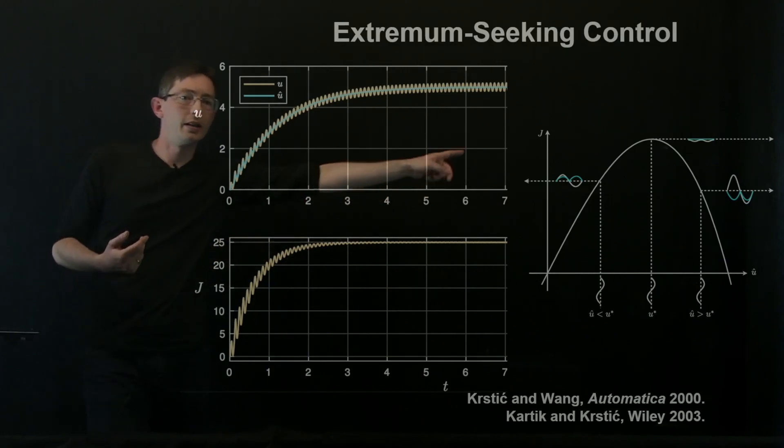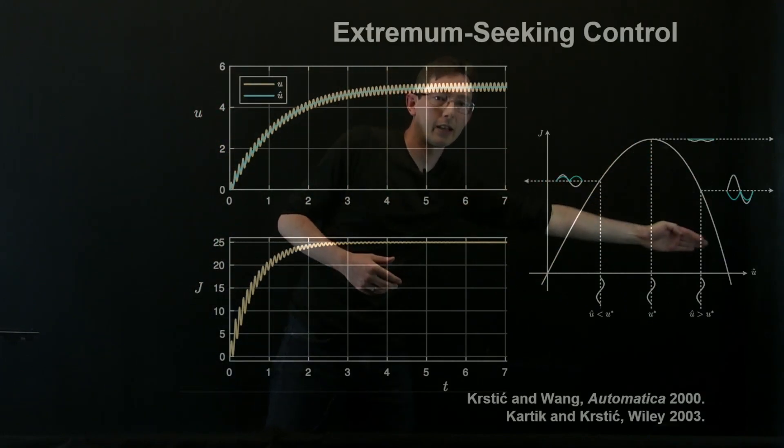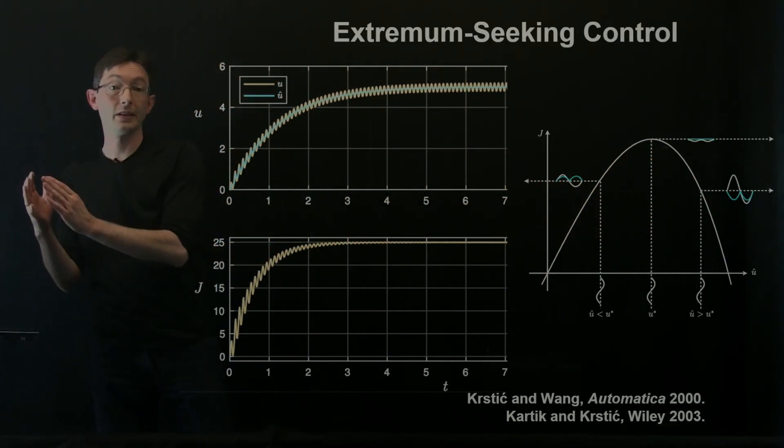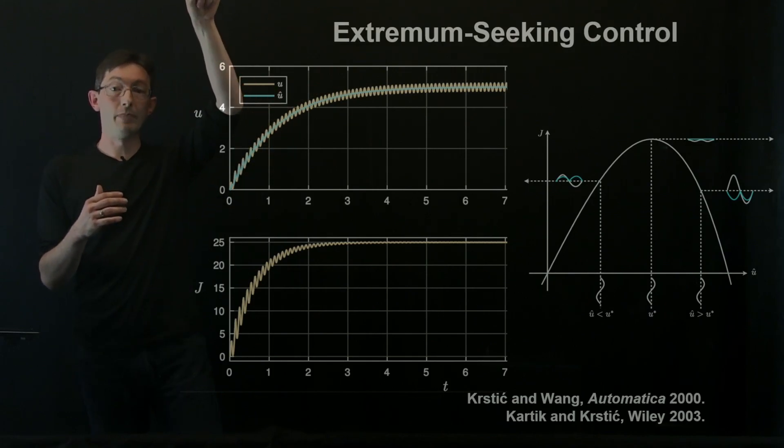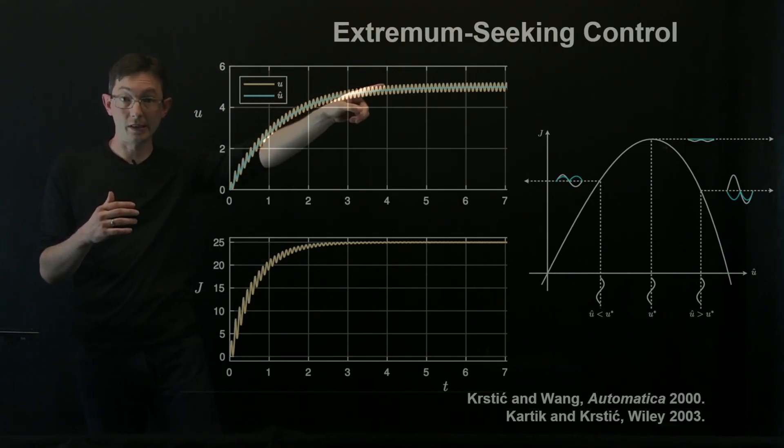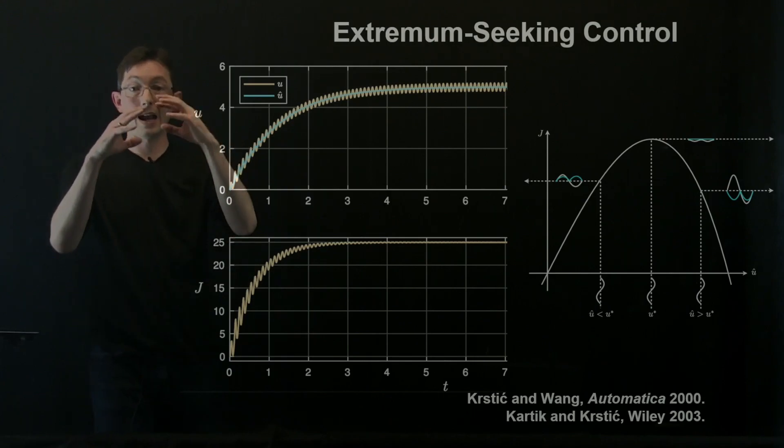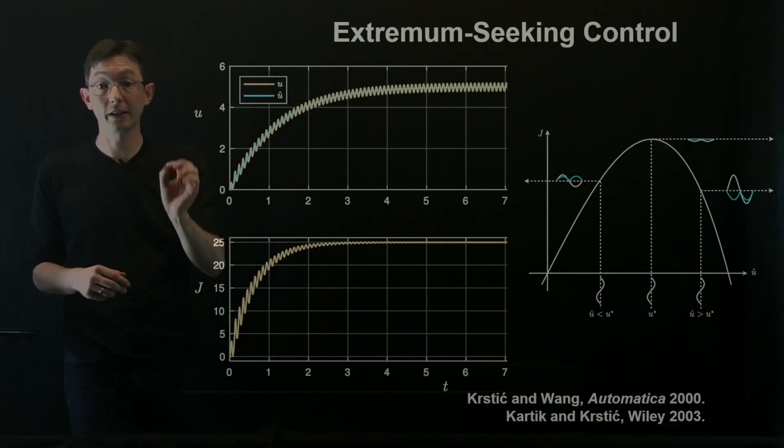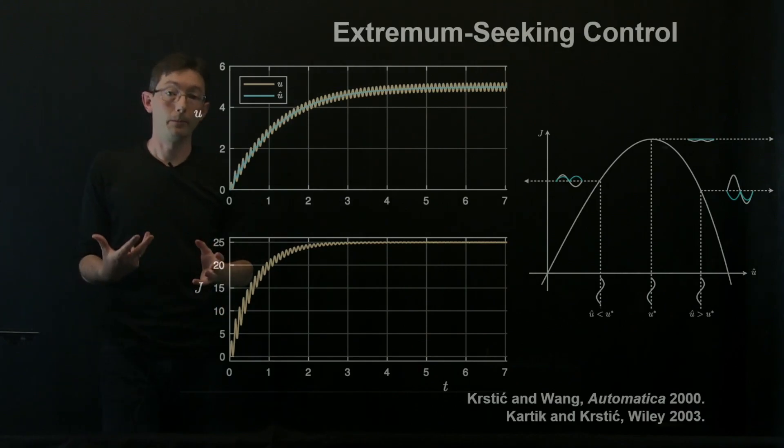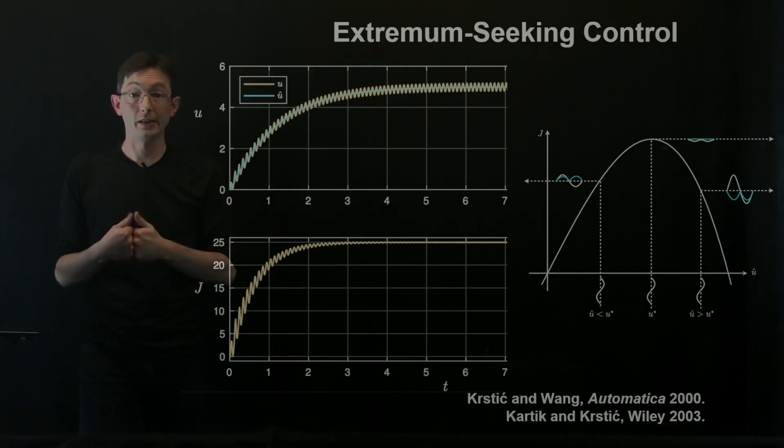So here we have a cost function that's quadratic. If I'm to the left of the optimizing value, in this case u equals 5, when I jiggle it tells me I should increase u. If I was above, then it would tell me I should decrease u, and essentially you can track this optimum value of your objective function j pretty easily just by adding the sinusoidal perturbation.